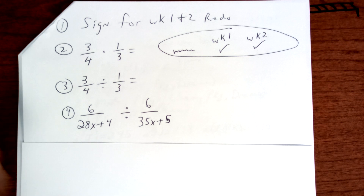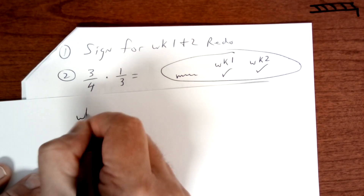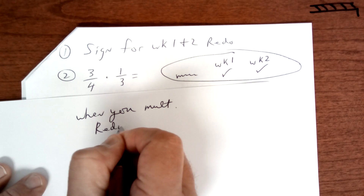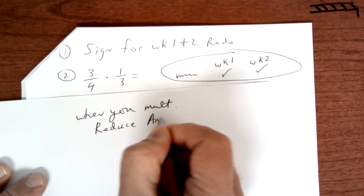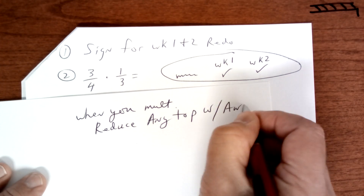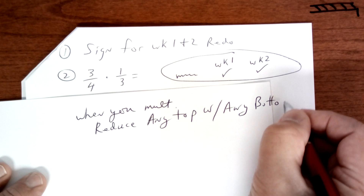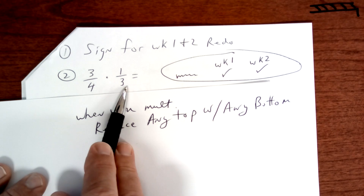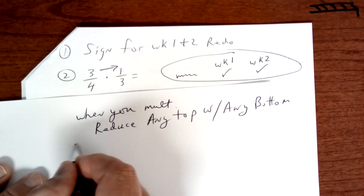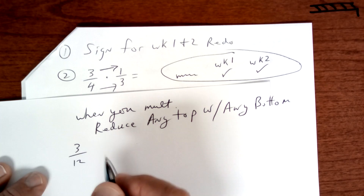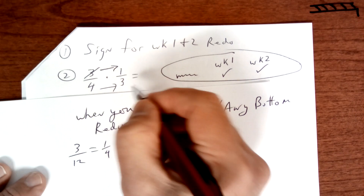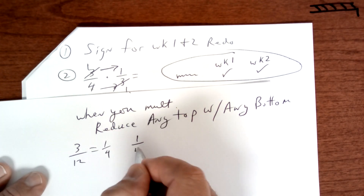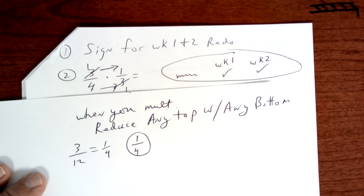When you multiply fractions, write this down: you can reduce any top with any bottom — those are called numerator and denominator. So here, multiplying, I could reduce the threes. If I don't, I multiply straight across to get 3 over 12, which reduces to 1/4. But it's much easier to reduce first: 1 times 1 is 1, and 4 times 1 is 4. I would reduce before multiplying — it makes it easier.